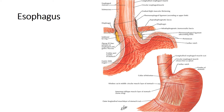At this junction, the epithelium changes, and the zigzag line is called the Z-line. It marks the junction of the esophageal and gastric mucosa. This can be seen in endoscopy in living subjects, but in embalmed cadavers it cannot be recognized. This is the cardia where the esophagus enters, and the muscle fiber directions change here as well.